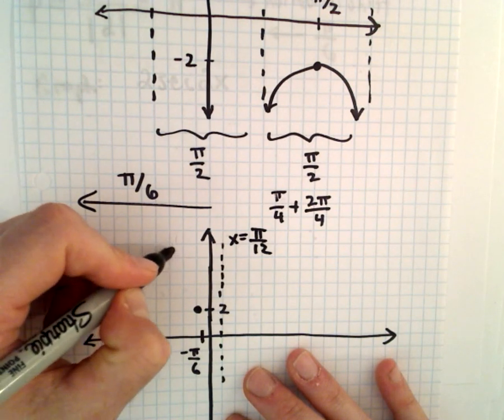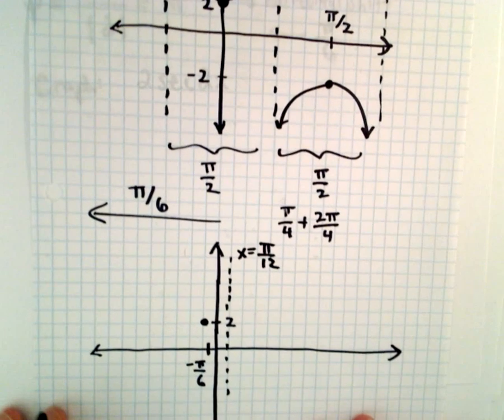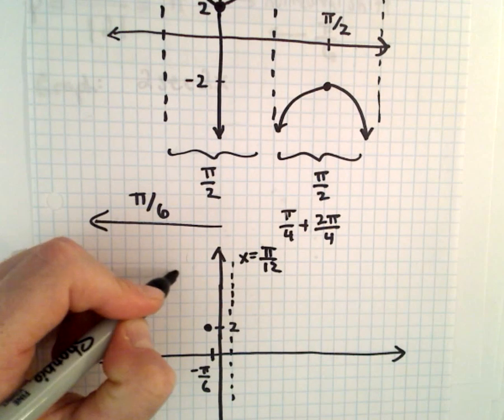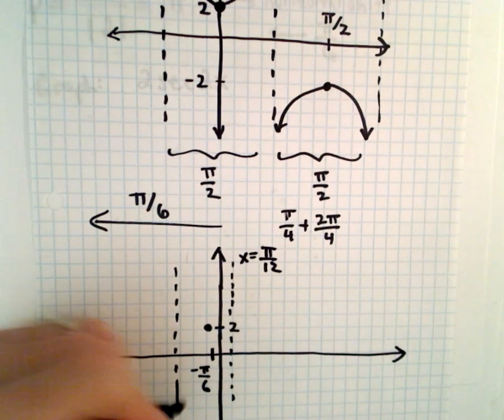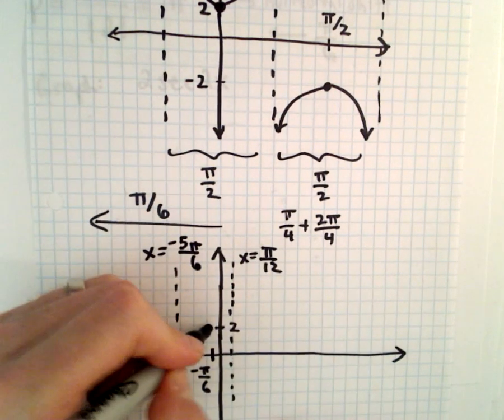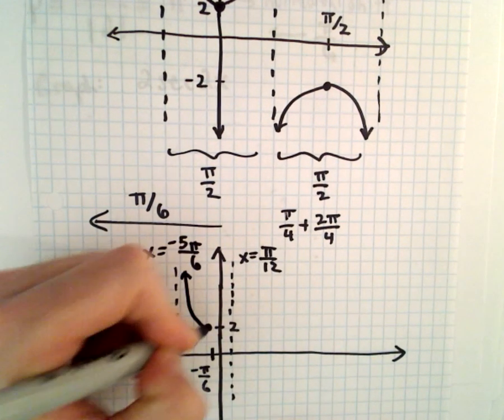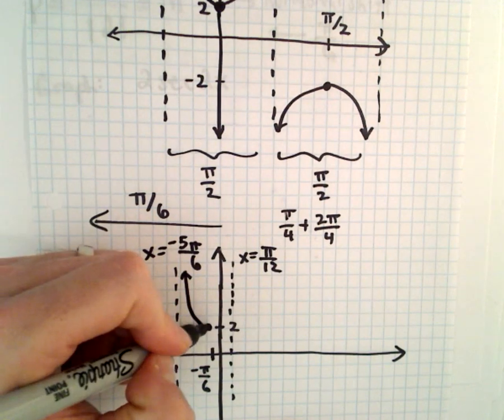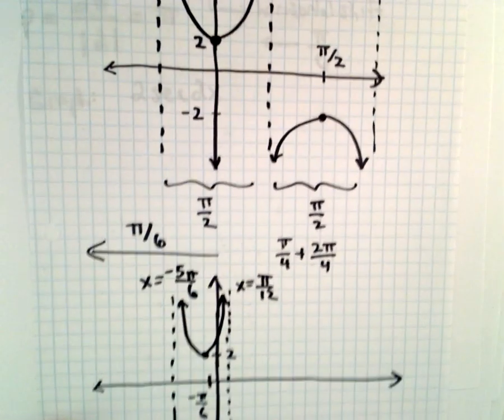So, definitely the scale on my graph here has changed a little bit, so forgive that. So, we'll make that x equals negative 5 pi over 12, and then it increases, and it increases.